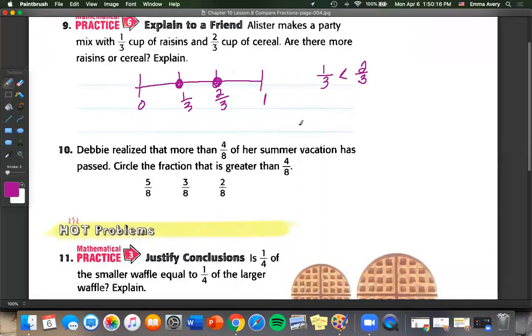Number ten. Debbie realized that more than four eighths of her summer vacation has passed. Circle the fraction that is greater than four eighths. So we have four. Is four greater than two? Yep. So we can cross that off. Is four greater than three? Yep. But four is not greater than five. So five eighths is our answer.